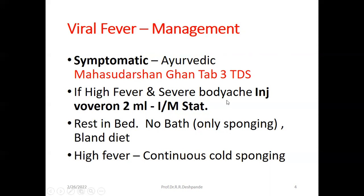For high fever and severe body ache, you may need allopathic medicine — like Voveran 2ml intramuscular injection, given stat when the patient presents with 102–103 degrees Fahrenheit fever and severe body ache. Rest in bed is essential in all viral diseases. No bath — only sponging. A bland diet is very important: no spicy food, no junk food or ready-to-cook substances. Continuous cold sponging is essential for high fever to avoid febrile convulsions.